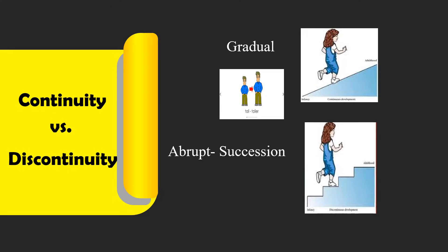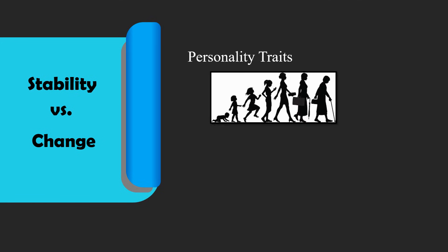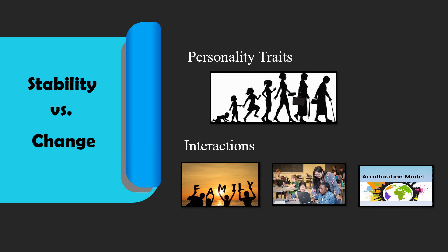Biological changes provide the potential for these changes. Psychologists of the discontinuity view believe that people go through the same stages, in the same order, but not necessarily at the same rate. Stability vs. Change: stability implies personality traits present during infancy endure throughout the lifespan. In contrast, change theorists argue that personalities are modified by interactions with family, experiences at school, and acculturation. This capacity for change is called plasticity. For example, Rutter in 1981 discovered that babies living in understaffed orphanages often become cheerful and affectionate when placed in socially stimulating adoptive homes.